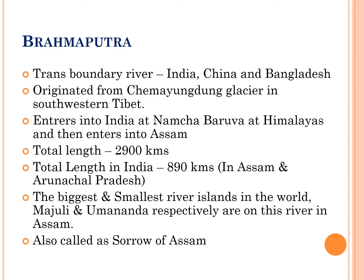Brahmaputra means 'the son of Brahma.' It is the only male river. The Brahmaputra river is a transboundary river between India, China, and Bangladesh. This river originates from the Chemayungdung glacier in southwestern Tibet and it enters into India at Namcha Barwa in the Himalayas, then it enters into Assam.